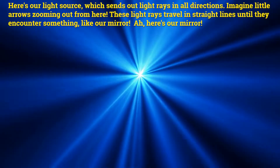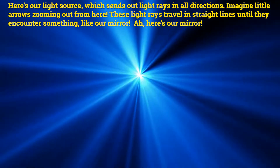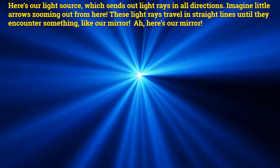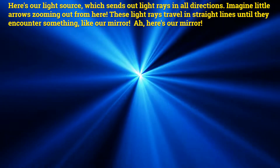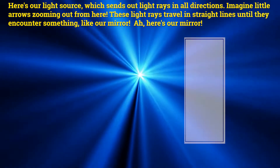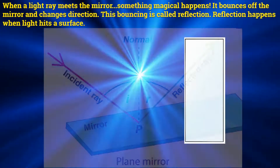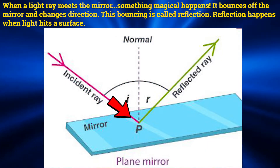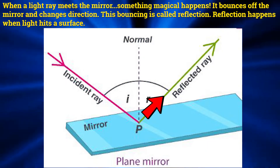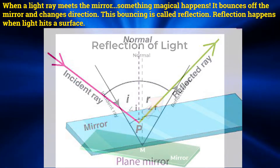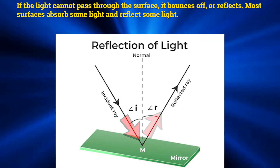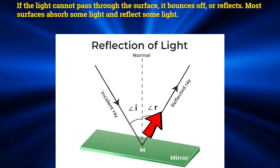Here's our light source which sends out light rays in all directions. Imagine little arrows zooming out from here. These light rays travel in straight lines until they encounter something like a mirror. When a light ray meets the mirror something magical happens — it bounces off the mirror and changes direction. This bouncing is called reflection. Reflection happens when light hits a surface. If the light cannot pass through the surface it bounces off, or reflects.